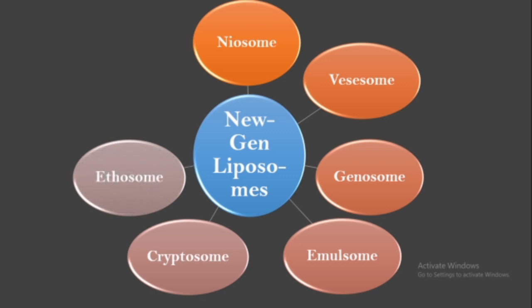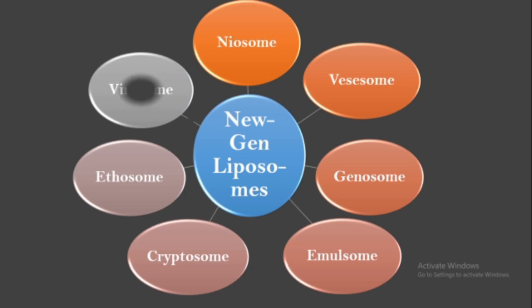Cryptosomes are very stable formulations because the phospholipids are attached with a polymer like polyethylene glycol, which increases stability. Ethosomes are made of phospholipids and alcohol in higher concentration and are mostly used for topical applications on skin. Virosomes are made of a phospholipid bilayer modified with a fusogenic viral protein, enabling the delivery of a drug, DNA, or antigen. These are some of the recent developments in the different forms of liposomes.